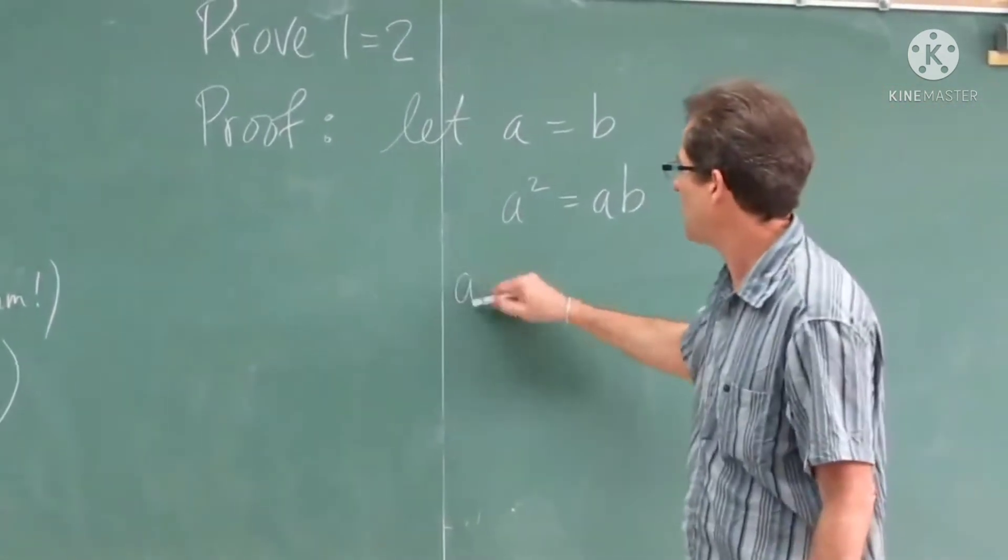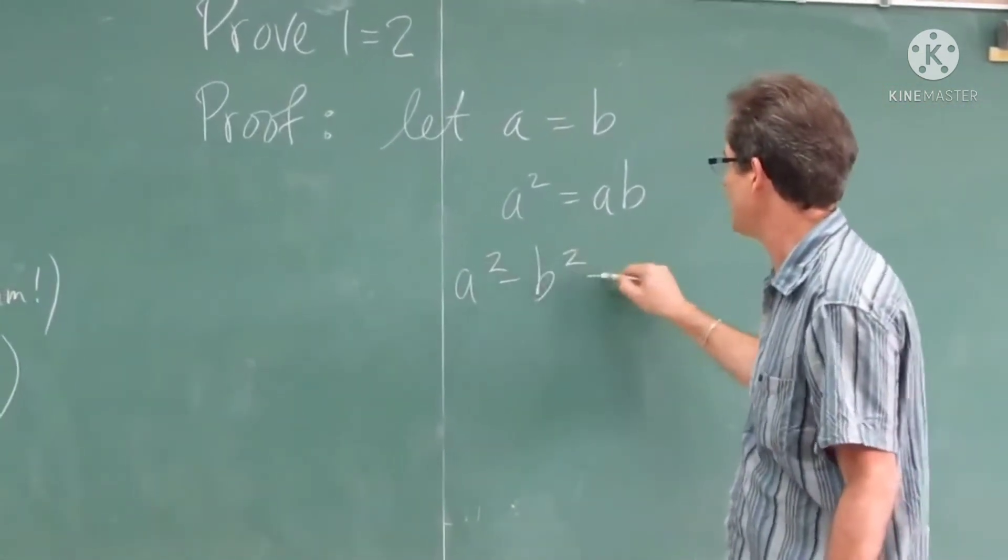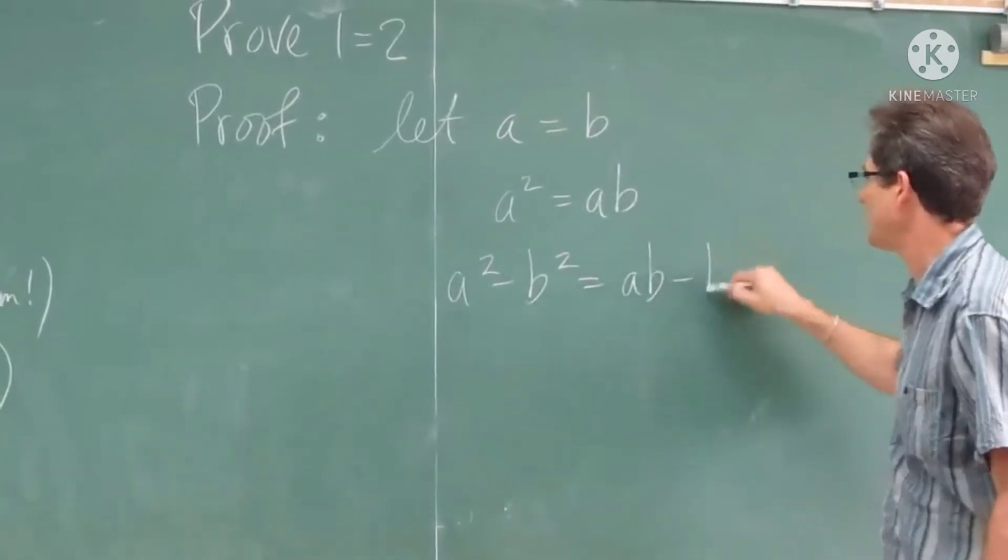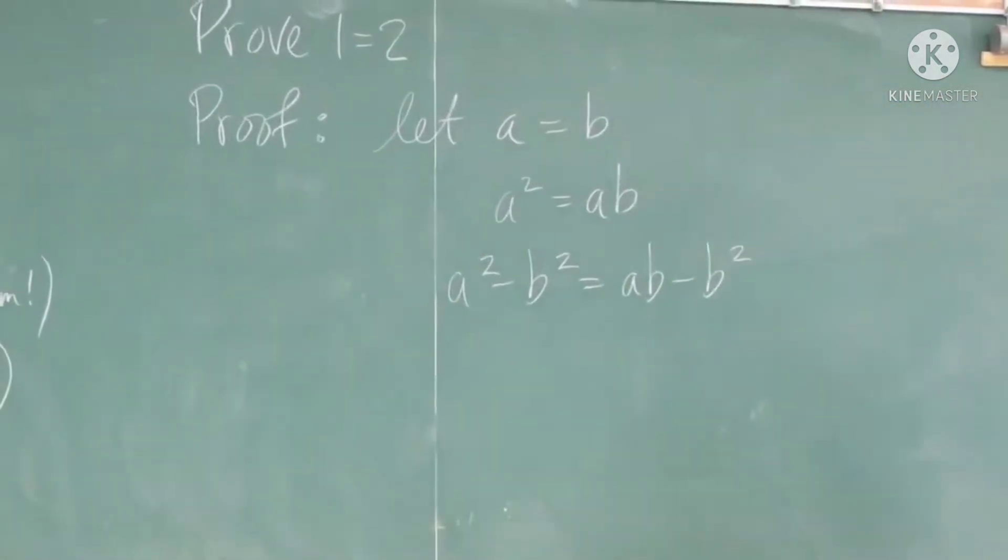Then, subtract B squared from both sides. All legal operations.